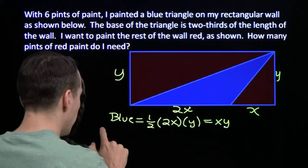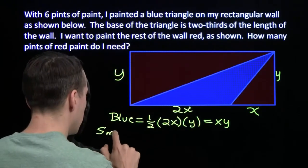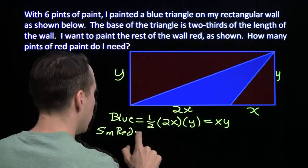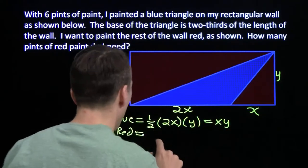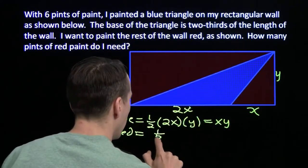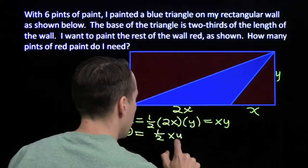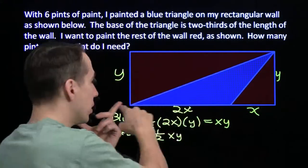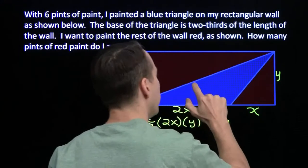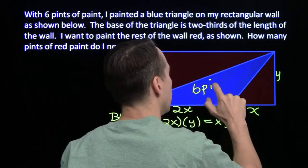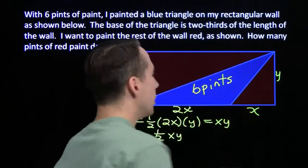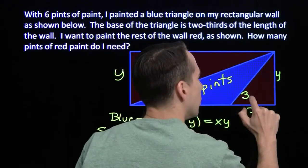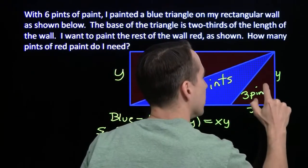Now we'll do the small red triangle. That's a right triangle. So the small red, the legs are x and y, so its area is just one-half x times y. So the small red triangle is just half the area of the blue triangle. So if the blue is six pints, then the small red must require three pints.